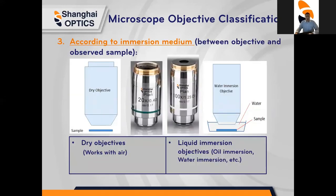According to the immersion medium between objective and observed sample, another classification for objective lenses is immersion medium. The immersion medium is located between the objective and observed sample. There are two immersion mediums that can be used: an objective may be placed in a dry medium which works with air, or it may be placed with a liquid medium such as oil and water.